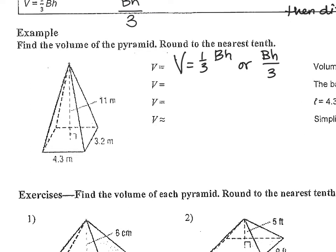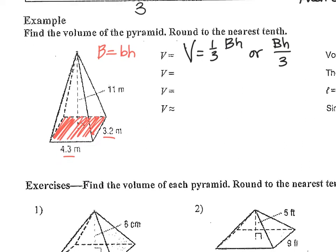Looking at this pyramid over here, what it's sitting on — that's your base. What shape is that base? Square, or rectangle, since these aren't the exact same numbers. So, what's the formula for finding the area of a rectangle? Length times width — because using the word base gets us confused. So we would do 4.3 times 3.2.